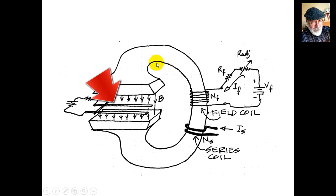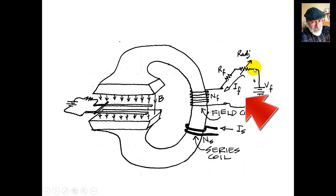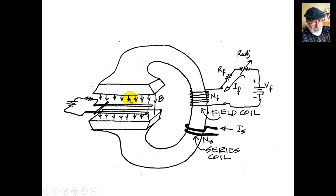To create the magnetic flux in the air gap, we apply a current to the field coil NF — the current is called IF. We apply an external battery VF and control how much current we put there with an adjustable resistor. That is how we control how much flux there is in the air gap.